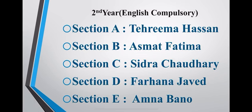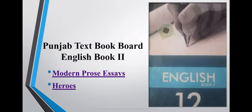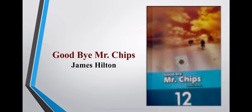We have informed you earlier about the books in your syllabus, but those students who have not purchased their books are advised to get their books as soon as possible from Punjab Textbook Board, Lahore. English Book 2. This book has two parts: Modern Prose Essays Part 1 and Heroes Part 2. In first year, there were one-act plays and this year we will go through a novel, Goodbye Mr. Chips by James Hilton.